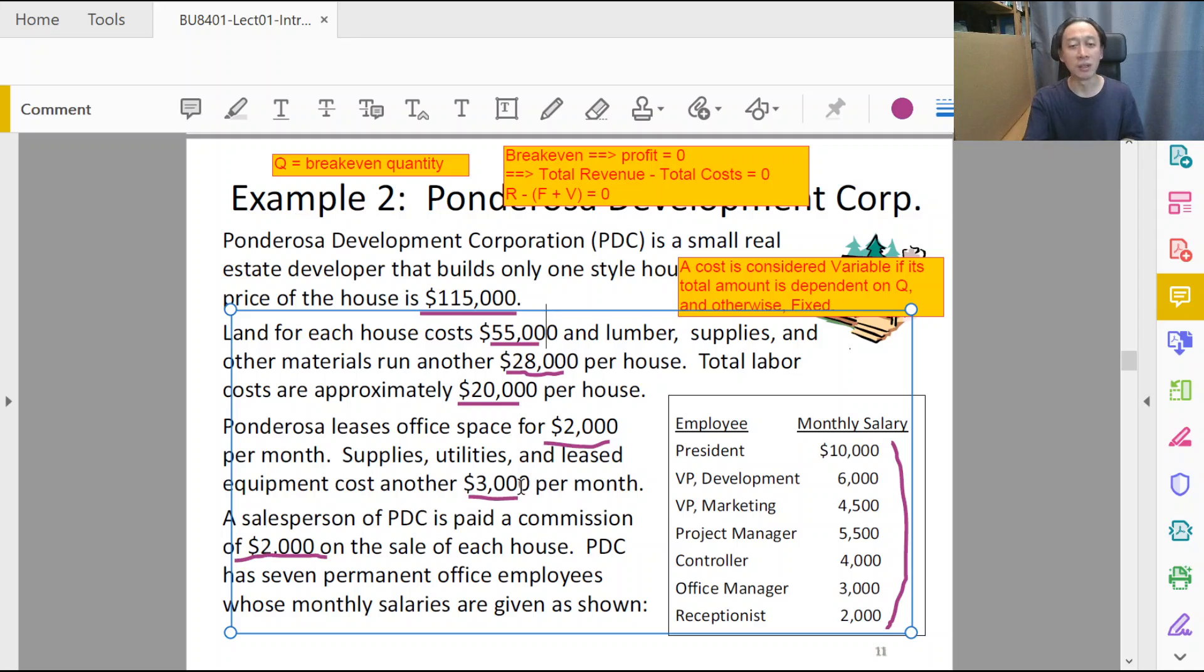Salesperson commission is two thousand dollars per house. More houses sold, more commission to be paid to salespeople, right? So variable. Salary? More houses we sell, president still gets ten thousand dollars, not more. So fixed.